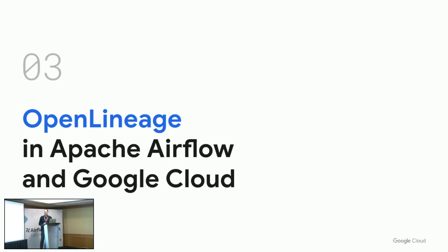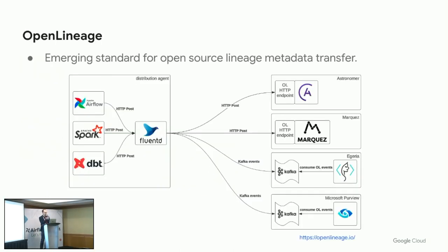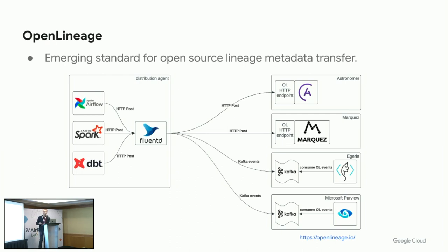This is where OpenLineage comes in. OpenLineage — Maciek will be talking more about it — is an emerging open-source standard in the industry for lineage. That diagram from the OpenLineage website is not up to date; we should have Dataplex there as well, as Dataplex two weeks ago announced support for OpenLineage. OpenLineage is supported by a number of technologies that produce lineage — Airflow, Spark, dbt, and others — and can be consumed by catalog-like technologies such as Marquez, Egeria, and others.